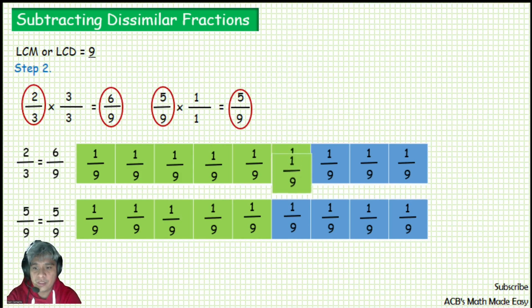You can see it clearly in the blocks that if we subtract 2/3 from 5/9, there will be 1 block remaining. 1 block representing 1 over 9, and it means our answer is 1 over 9.